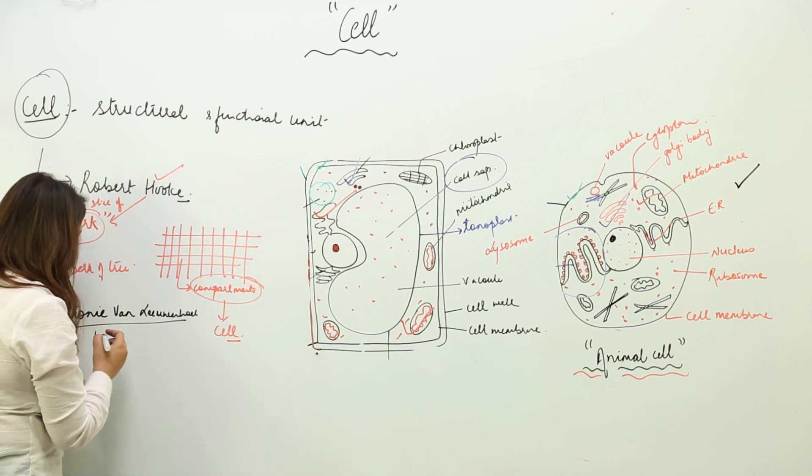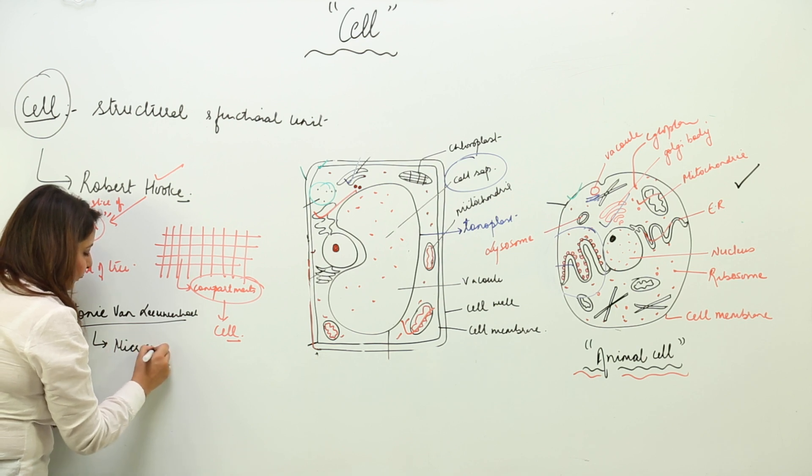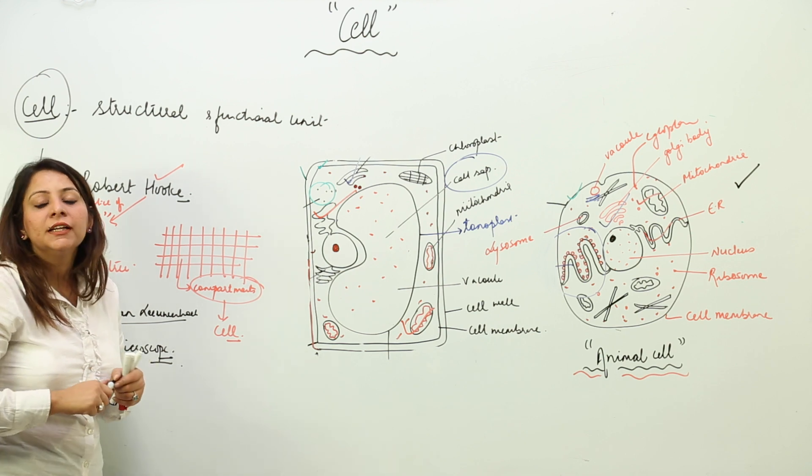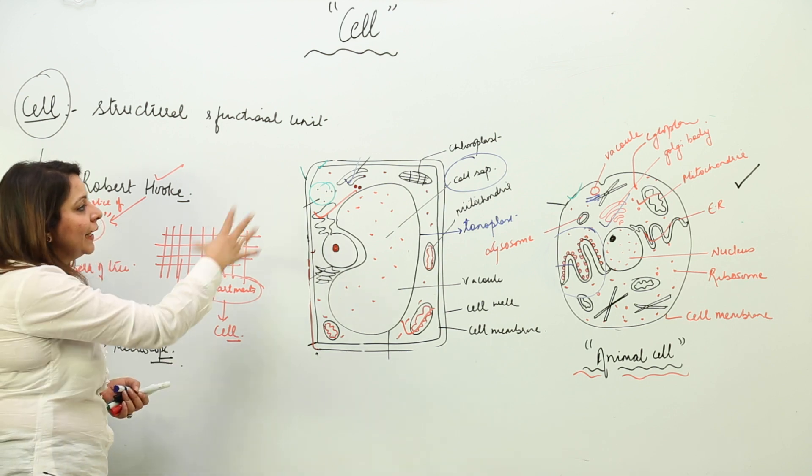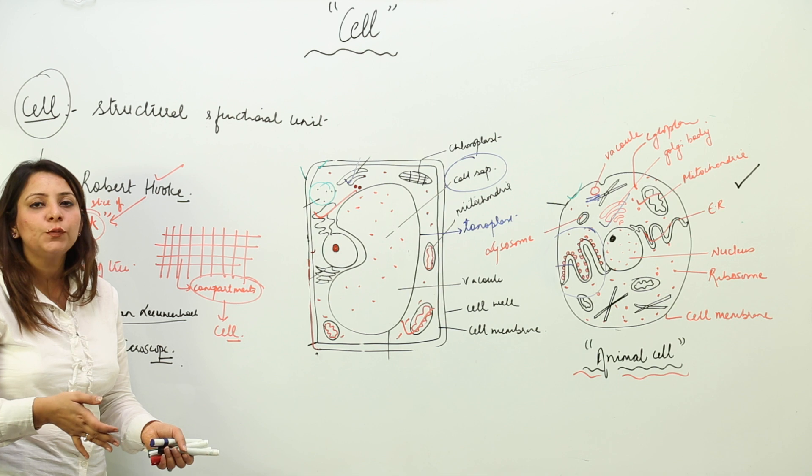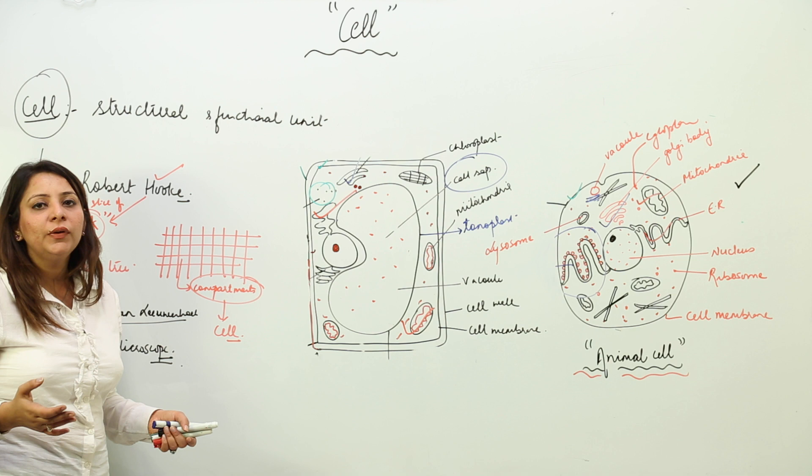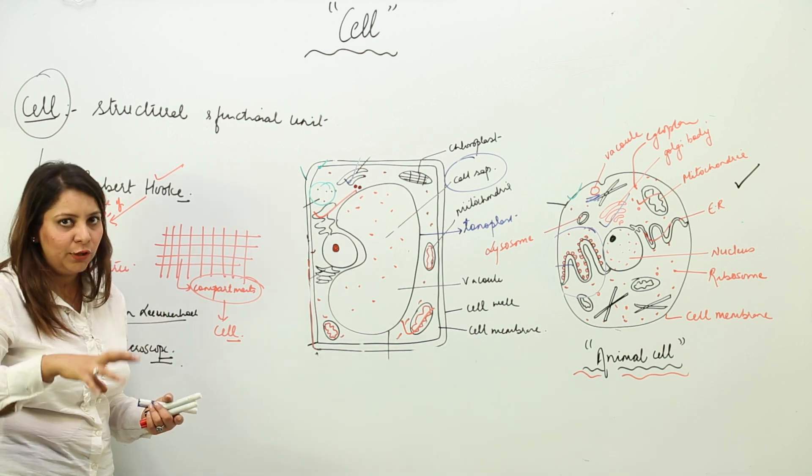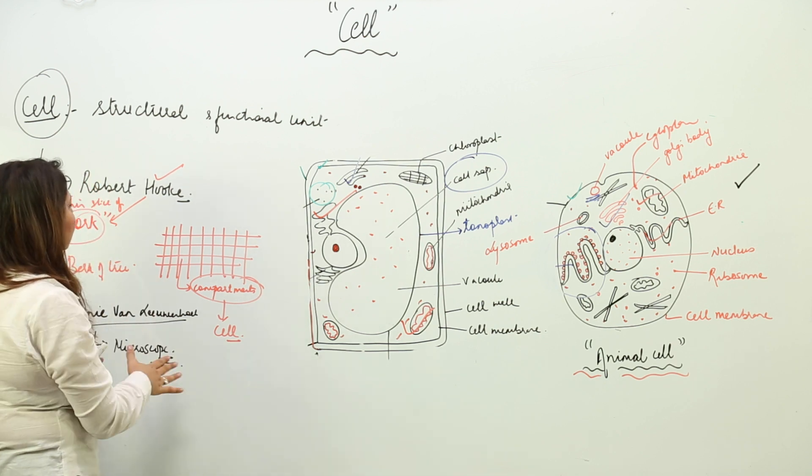He is the one who's called the father of microbiology. He was the one who discovered the microscope. The microscope is an instrument which is used to magnify things. We are able to see all these things in the cell just because of the microscope, which can actually magnify the substance up to a magnification of lakh.